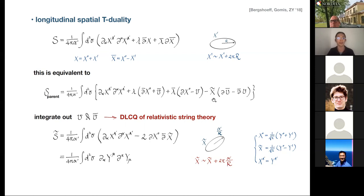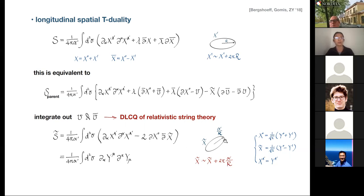Instead, if you integrate out v and v-bar, you pass to the T-dual side where x-tilde plays the role of the T-dual coordinate. As a result you get the DLCQ of relativistic string theory, which becomes more manifest after taking a set of coordinate redefinitions and writing everything in standard Lorentz-covariant form. Note that the dual coordinate x-tilde is compactified on the dual circle of radius alpha-prime over R, and x-tilde is formed by y^0 minus y^1 — a light-like direction.